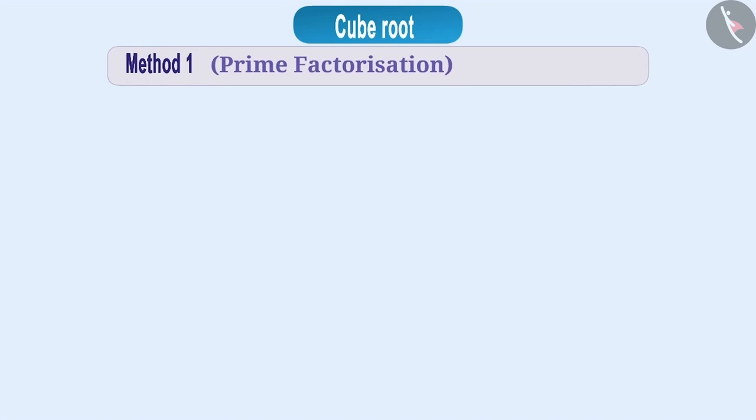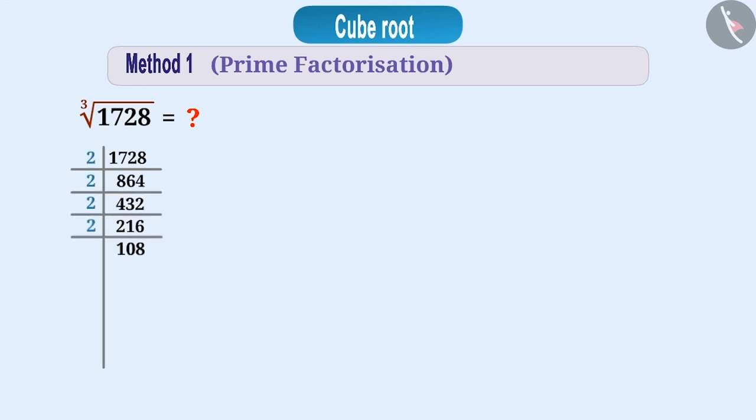First of all, we will learn how by using prime factorization, we can derive the cube roots. Let's get the cube root of 1728. For this, we will do prime factorization of 1728. In this method, we divide the number by prime factors until we get a prime number or 1.